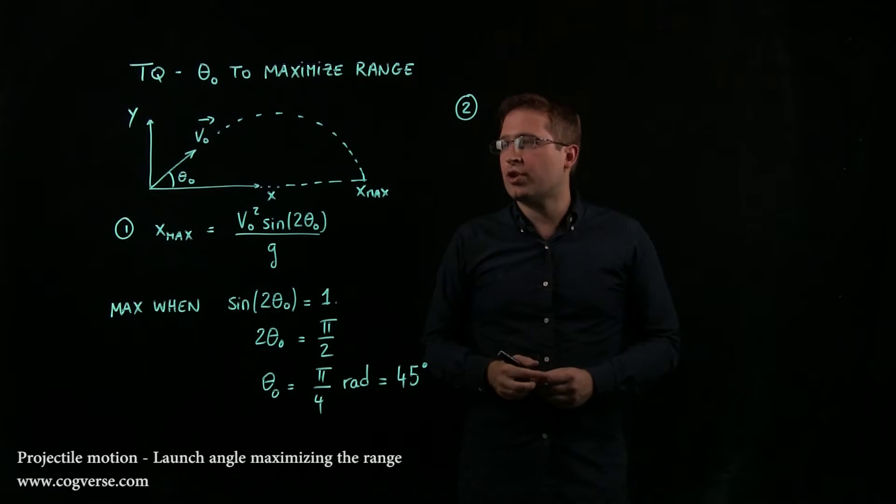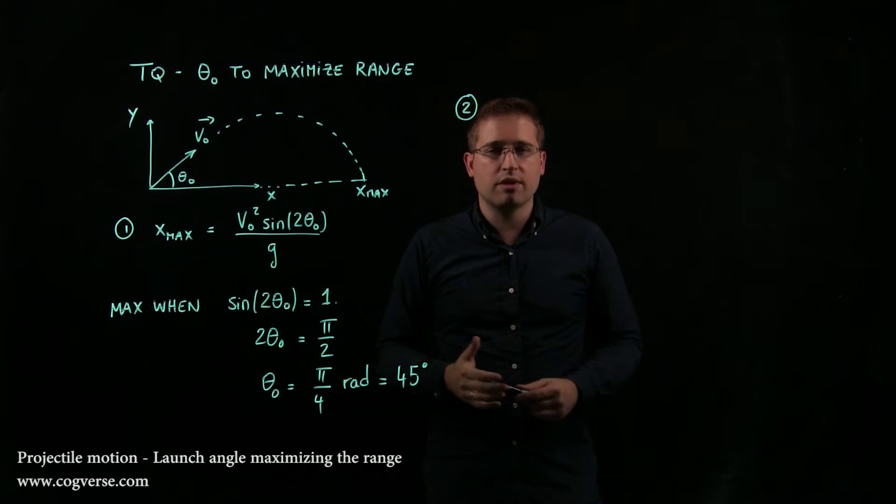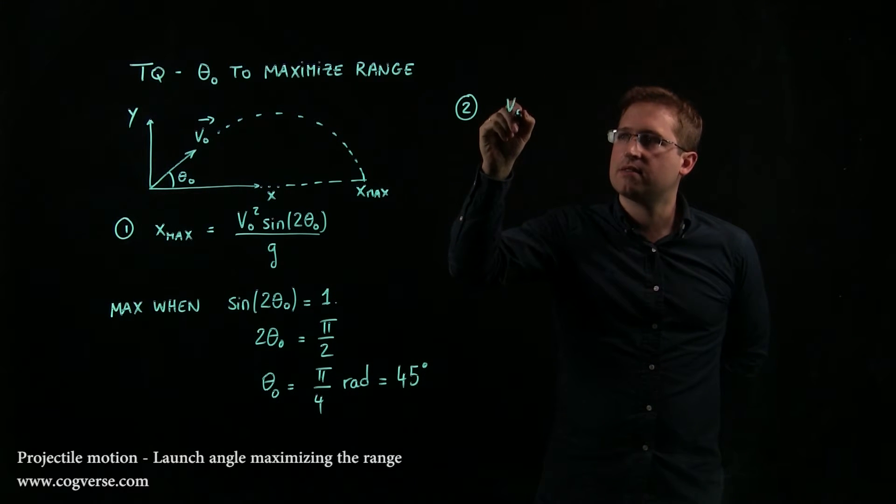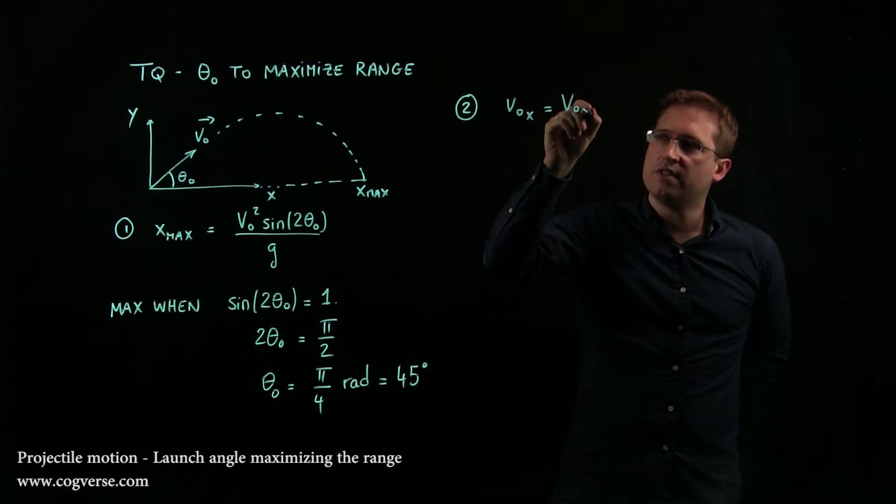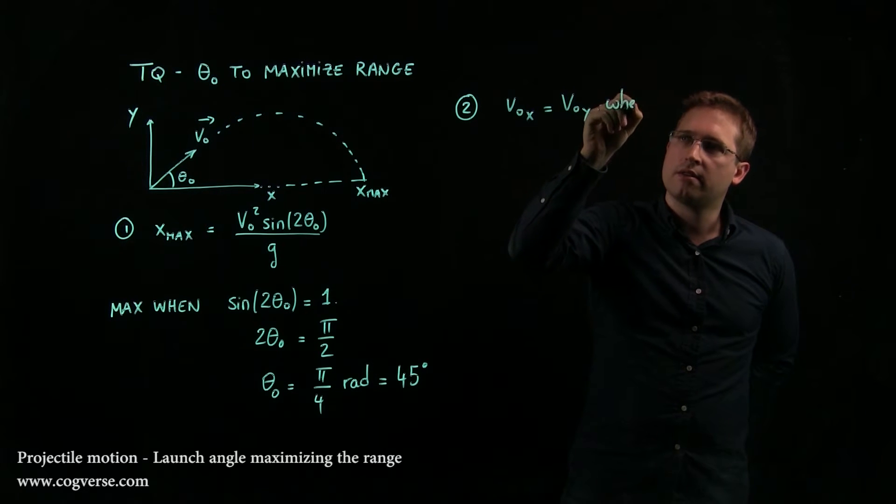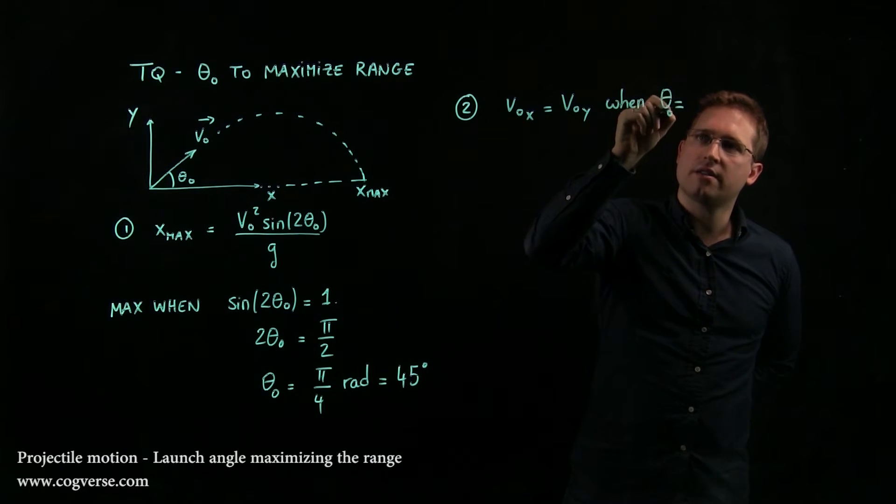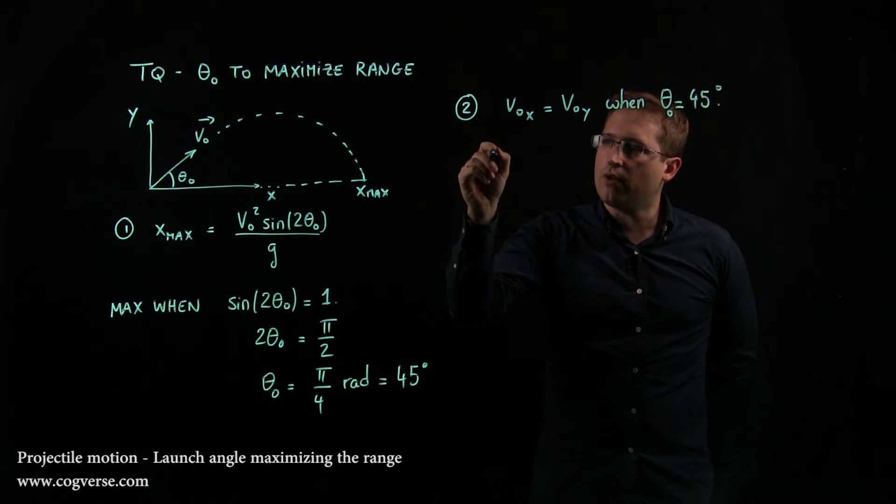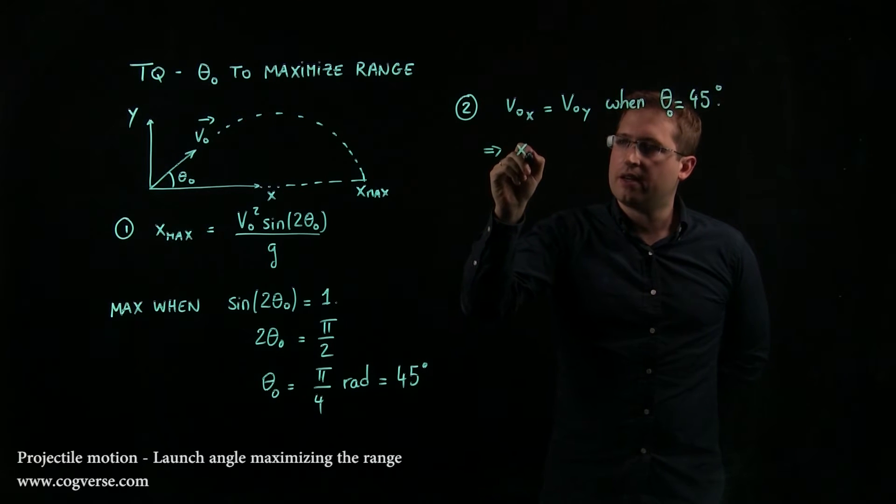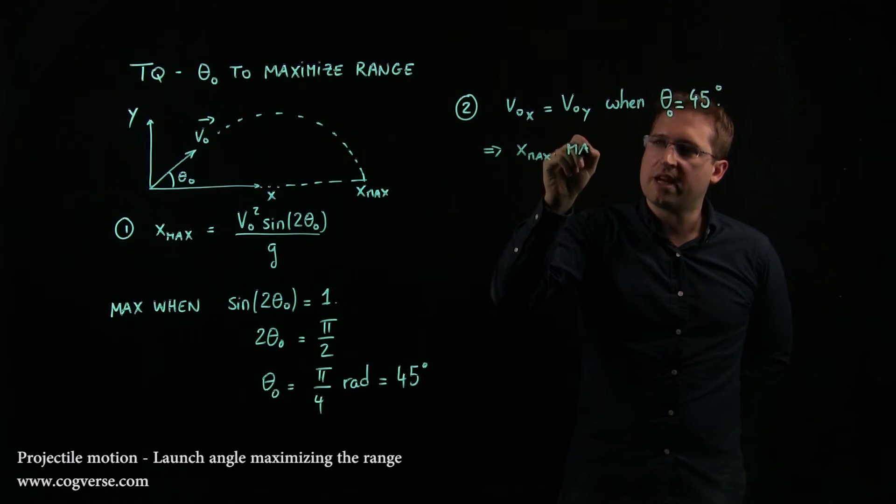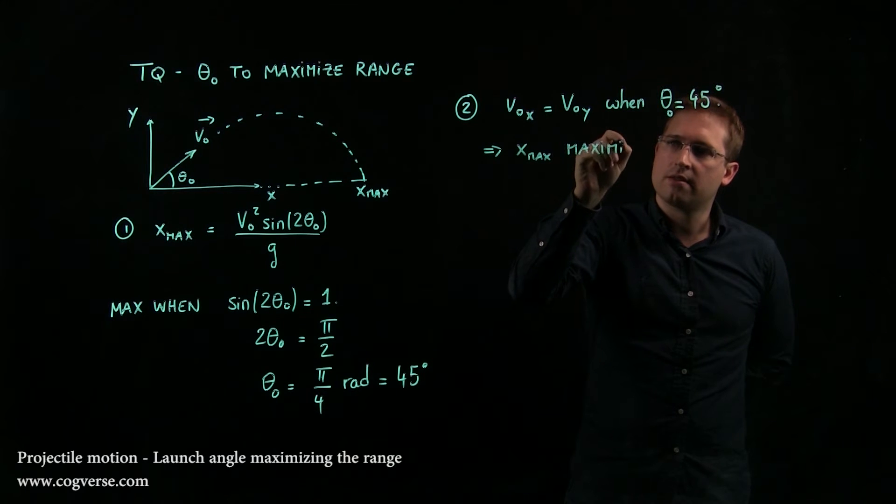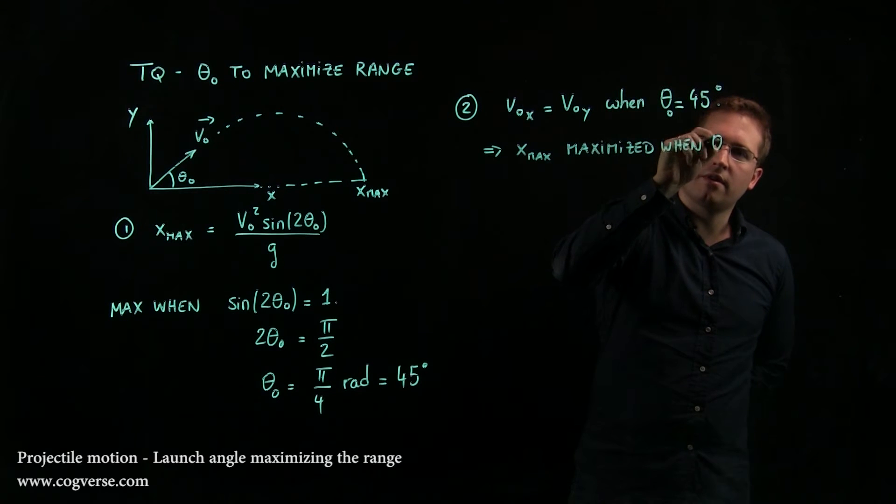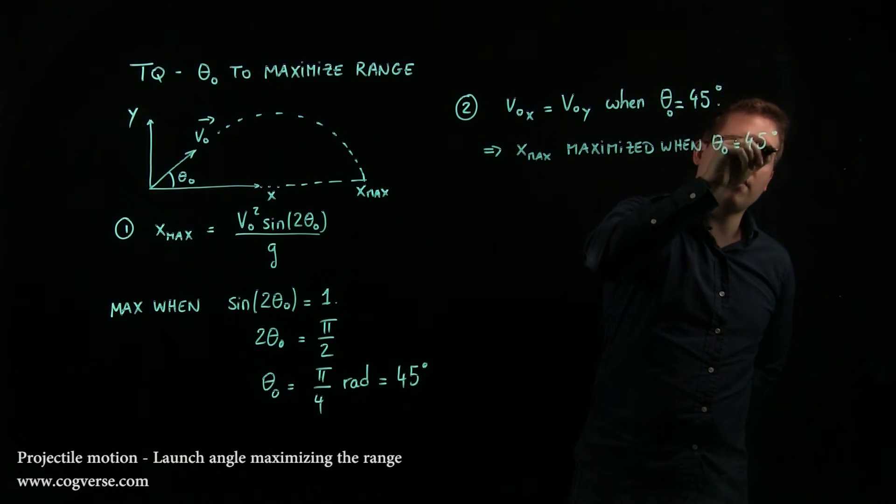And so we're going to find that 45 degrees conceptually seems to be the best angle for that trade-off, because v₀ₓ is equal to v₀y when θ₀ is equal to 45 degrees. So, therefore, xₘₐₓ is maximized when θ₀ equals 45 degrees.